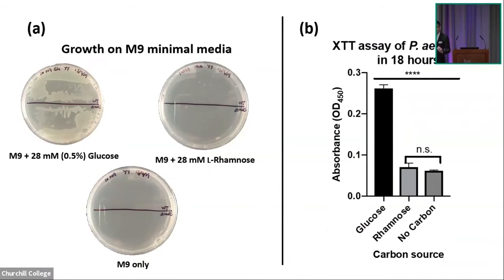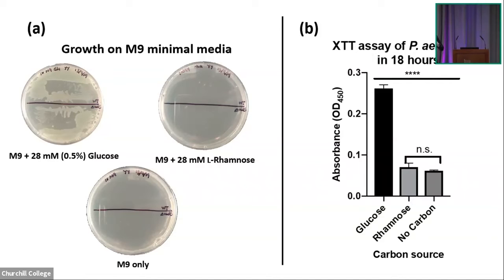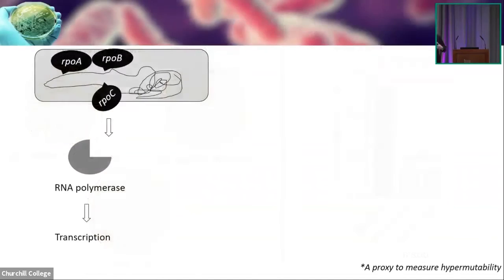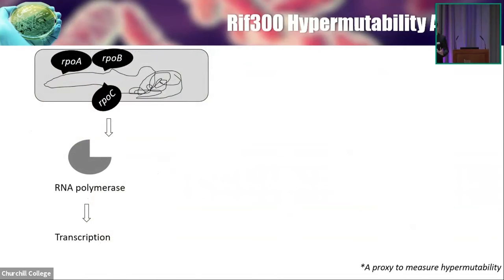Before this, I also made sure that the rhamnose I am using is not metabolized by the bacteria, otherwise it would be quite useless. When I grow them on glucose, they grow happily, but on the rhamnose plate and without any carbon sources, they are not able to grow. When I did the XTT assay as well, there is no difference between no carbon and rhamnose, but with glucose they can grow happily — which means they cannot metabolize the rhamnose, making rhamnose a really good inert chemical inducer.